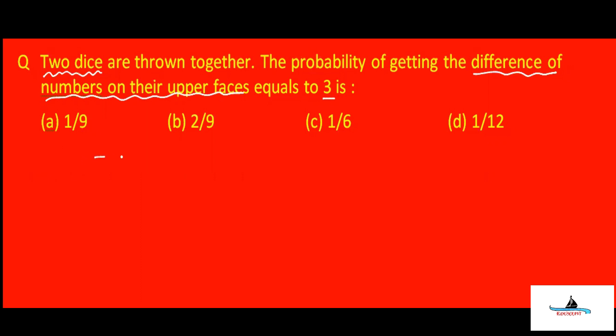Remember there are two dice — dice one and dice two. Each die has six faces, from one to six. The number on the topmost face facing you is what we use. The difference means if we subtract, the result should be three. So note down all possible combinations and then pick out the favorable ones.